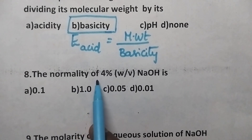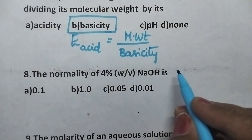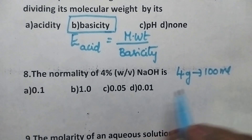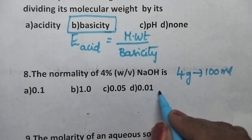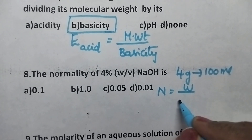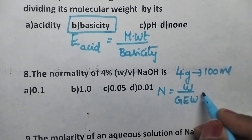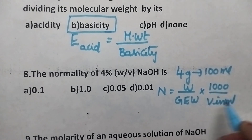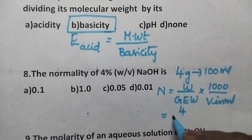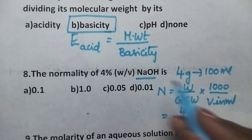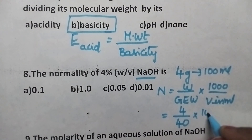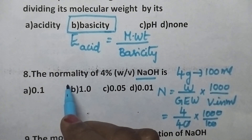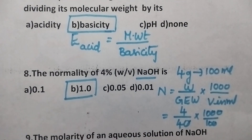The normality of 4% NaOH is? A 4% solution means 4 grams is dissolved in 100 ml of the solution. The formula for normality is: normality equals weight divided by gram equivalent weight, into 1000 divided by V in ml. That is equal to 4 divided by 40, into 1000 by 100, and that is exactly equal to 1. So option B is the right answer.